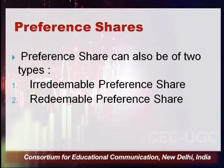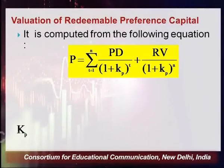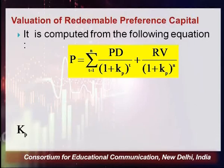Preference shares can be of two types: irredeemable preference shares, which have no specific maturity period (though not allowed in India under the Companies Act), and redeemable preference shares, which have a maturity period after which the company must repay them. For valuation of redeemable preference shares, there are two components: preference dividend received each year, and the redemption value received at maturity — both discounted to present value.